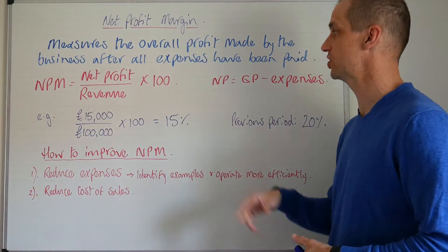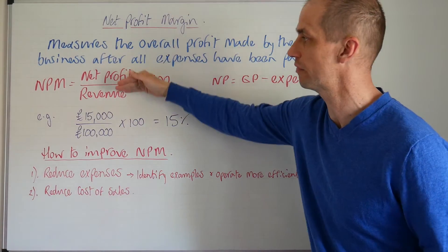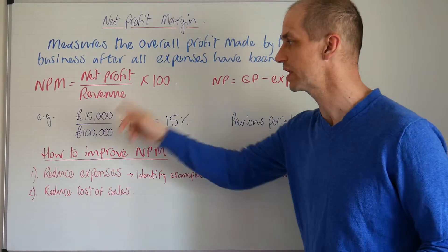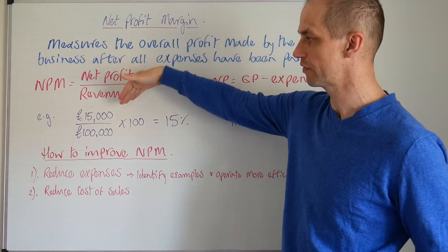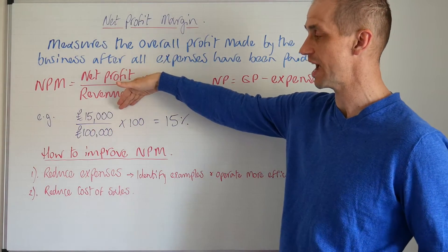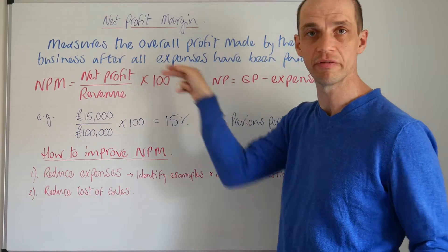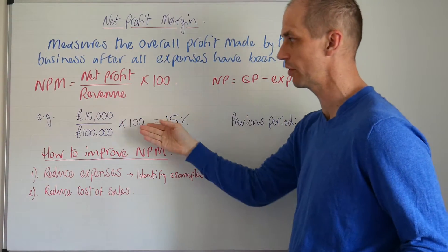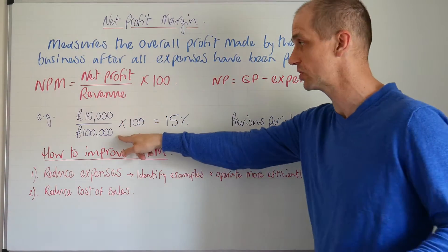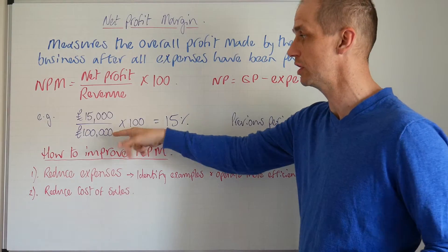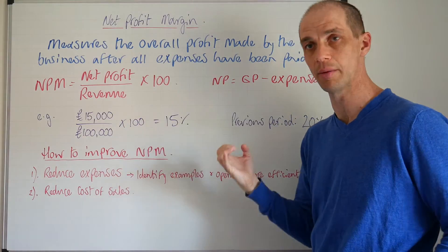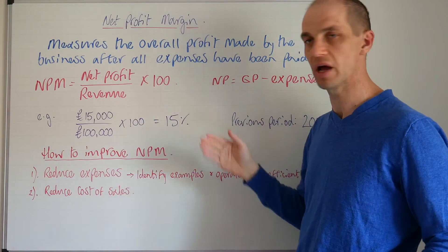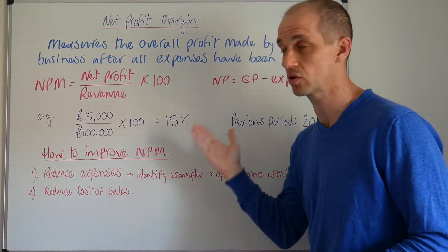In this case you can see that we have net profit divided by revenue, multiplied by a hundred. We've got fifteen thousand pounds of net profit made by this business in this period, and a hundred thousand pounds of revenue — sales income — coming into the business. When you multiply that by a hundred you get fifteen percent.